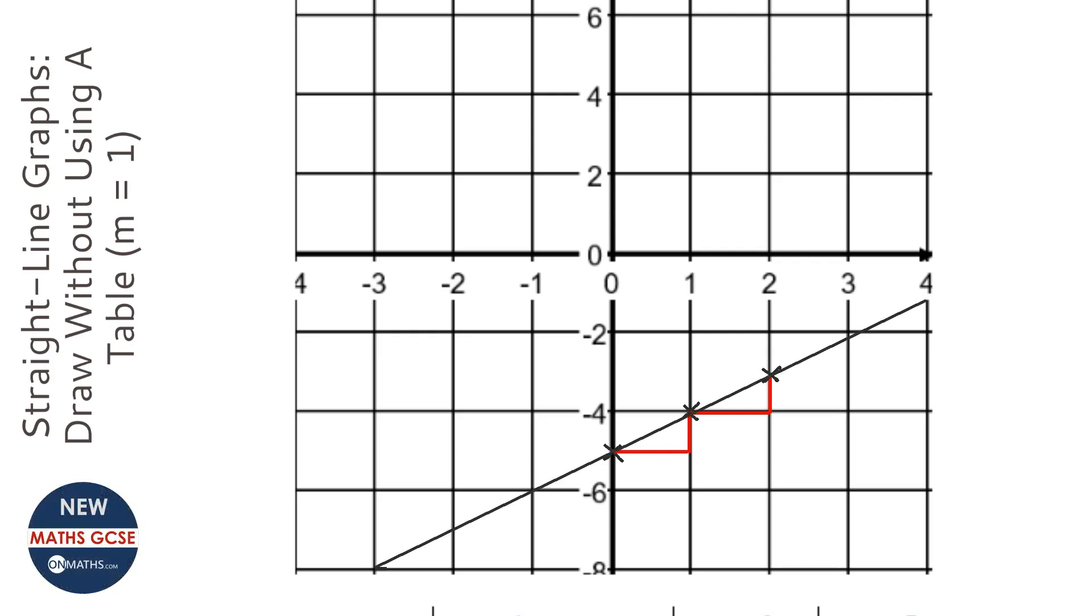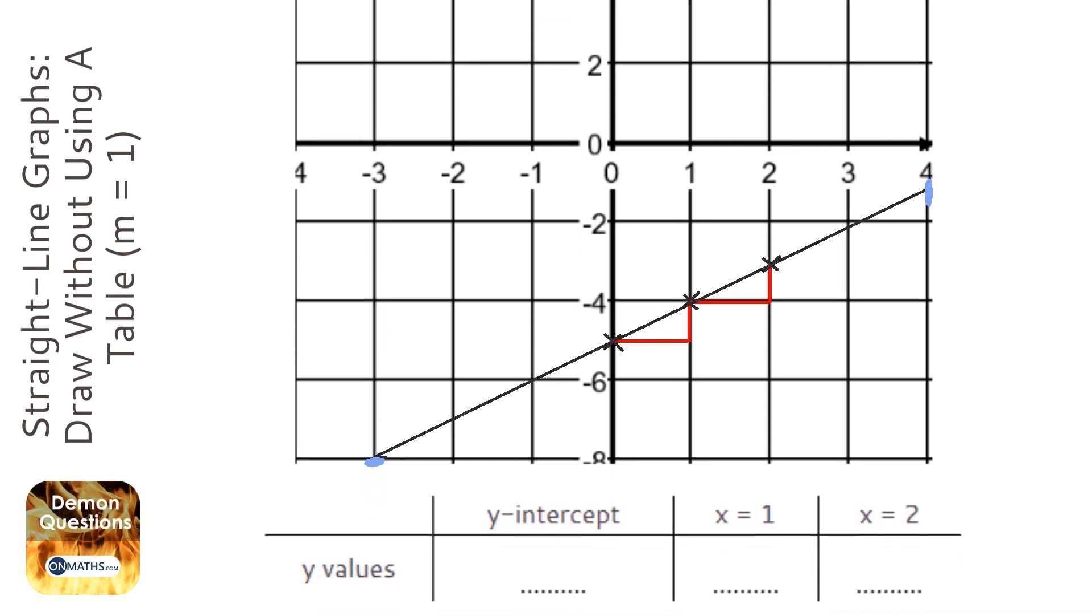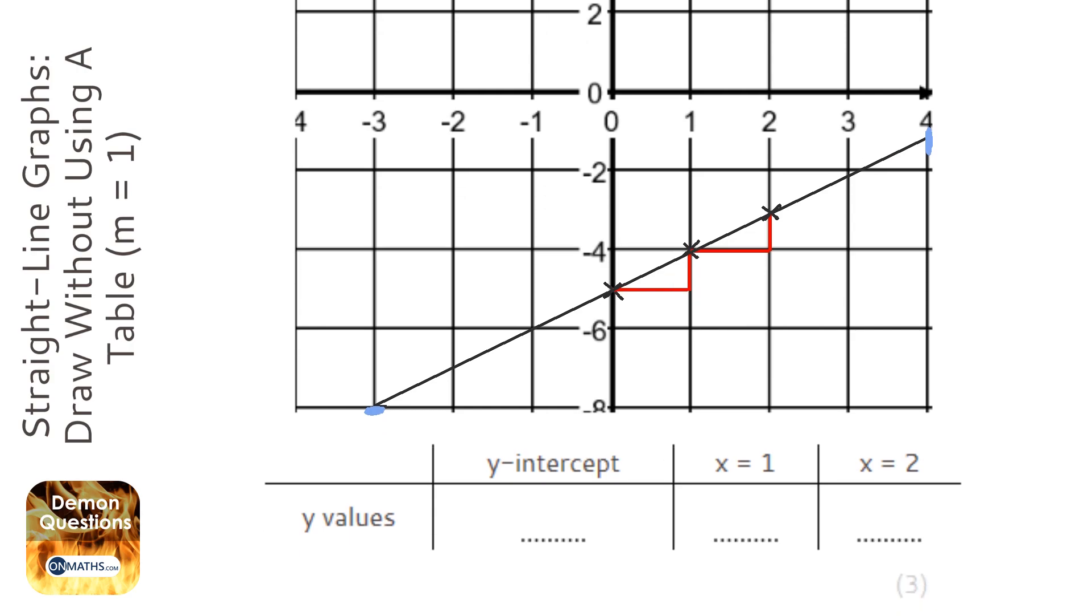Make sure your line starts where the graph starts and ends where the graph ends, because that line is actually infinite. It goes on forever. But obviously, we don't draw it forever, we just draw it for the length of the graph.